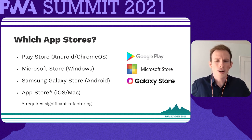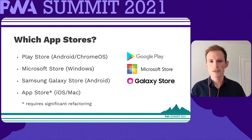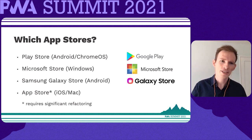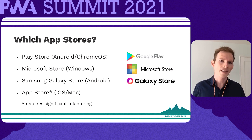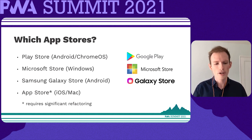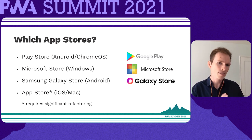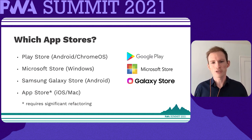So which app stores are available to you? First off, we have the Play Store, which is obviously on Android but also on Chrome OS. Then there's the Microsoft Store on Windows and the Samsung Galaxy Store on Android, which is actually a new one for me. And then finally there's the App Store, and I put an asterisk by it for two reasons. First off, Apple doesn't encourage the submission of packaged websites to the App Store — they'll want you to have something that clearly distinguishes your packaged PWA from your actual PWA or website.